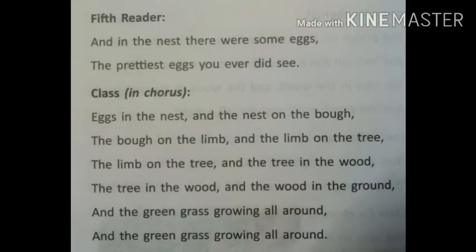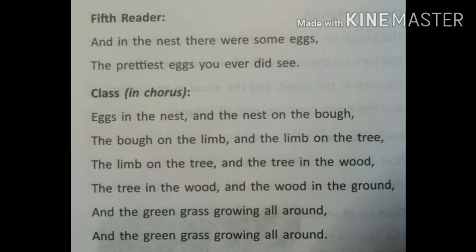Fifth reader: 'And in the nest there were some eggs, the prettiest eggs you ever did see.' The fifth reader was saying that there were some beautiful eggs in the nest that you had never seen before. Class in chorus: 'The eggs in the nest and the nest on the bough, the bough on the limb and the limb on the tree, the tree in the wood and the wood in the ground, and the green grass growing all around.' The whole class described the beautiful tree in the jungle with its trunk, branches, a nest with eggs, and green grass growing around it.